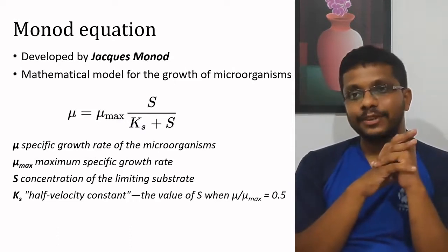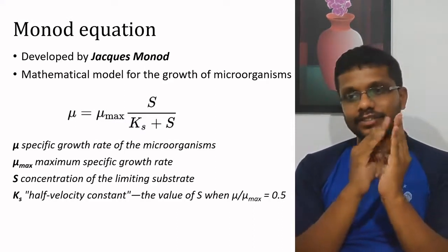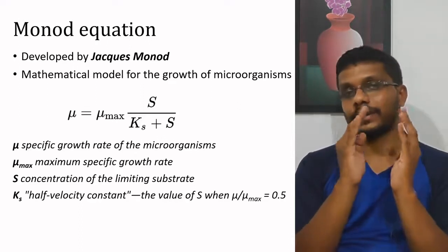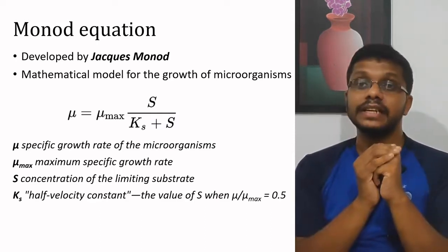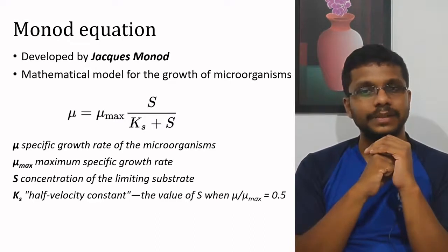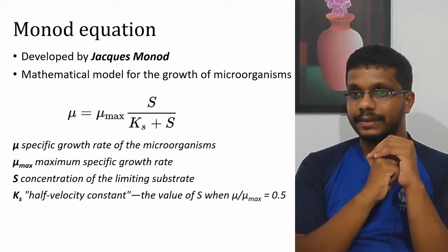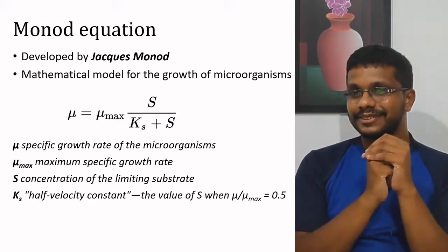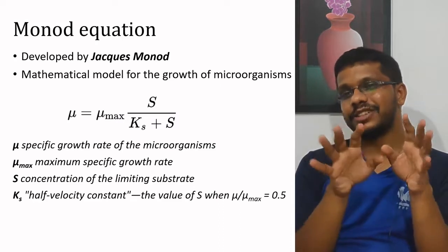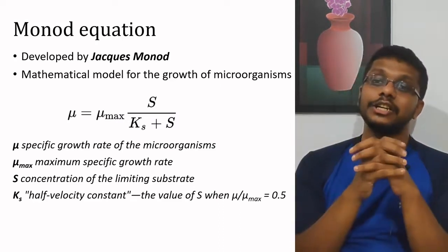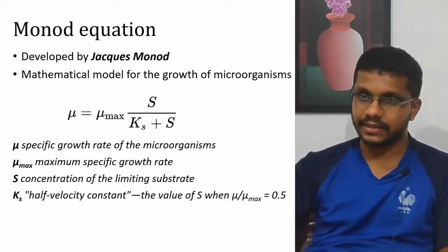When thinking about kinetics, there will be some equations. In this case, we have the Monod equation, which is a mathematical model for the growth of microorganisms, developed by Jacques Monod. It states: mu equals mu_max times S divided by (Ks plus S). Most of you will find this familiar — it is similar to the Michaelis-Menten equation: v equals v_max times S divided by (Km plus S). The Monod equation is very much related to the Michaelis-Menten equation, but here we are measuring microbial growth kinetics.